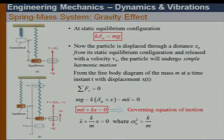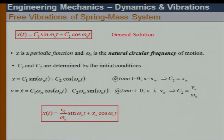Rewriting the equation of motion: ẍ + (K/m)·x = 0. I define the parameter omega_n squared, which we call the natural circular frequency of vibration, where omega_n² = K/m. I can then solve this differential equation. The general solution is C₁·sin(omega_n·t) + C₂·cos(omega_n·t).